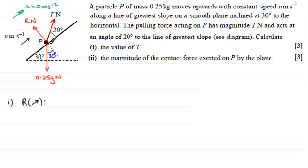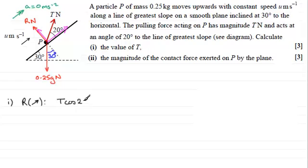One component of T is up the plane and one is perpendicular to the plane. When the angle between your force and the direction you're resolving is known, we use the cosine of that angle. So the force up the plane is T cos 20 degrees — that's the effective component pulling the particle up the plane. The perpendicular component of T has no effect here.